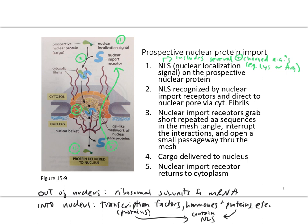The nuclear import receptor then returns to the cytoplasm — going back through the nuclear pore and through those fibrils — to repeat the process, finding other cargo and bringing it in. These steps are numbered 1 through 5, corresponding to the steps shown in figure 15-9.